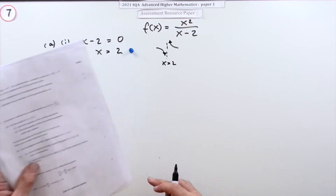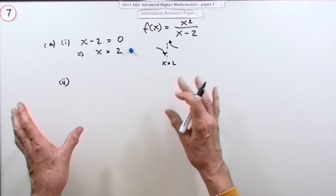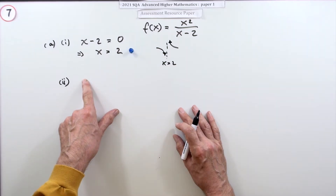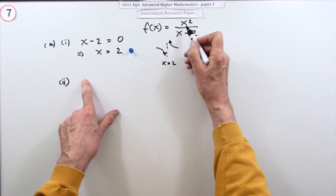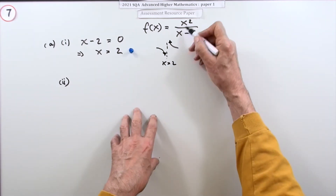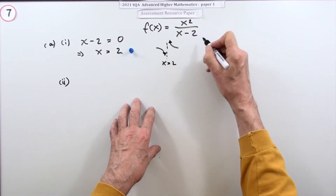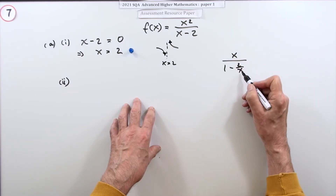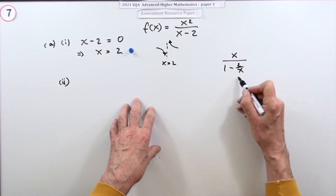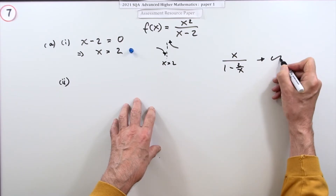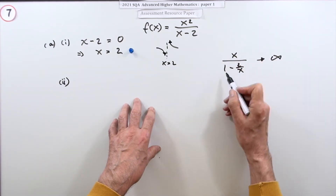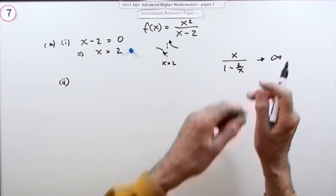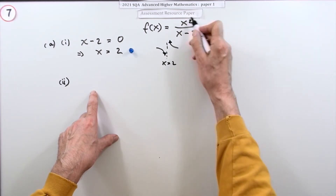Part two: find the equation of the non-vertical asymptote and justify your answer. You want to know what the graph looks like as x gets very large. Don't just divide the top and bottom by x - that only finds the limit. Dividing everything by x gives x over 1, which goes to infinity, so that doesn't tell you the asymptote equation.